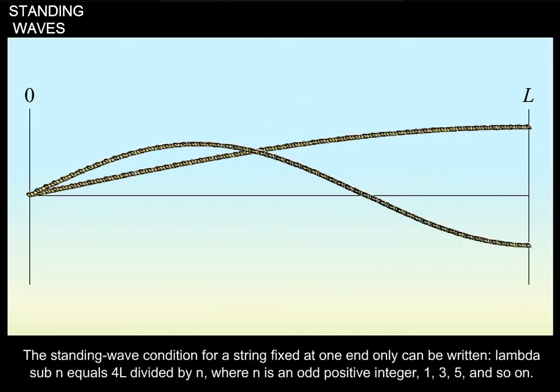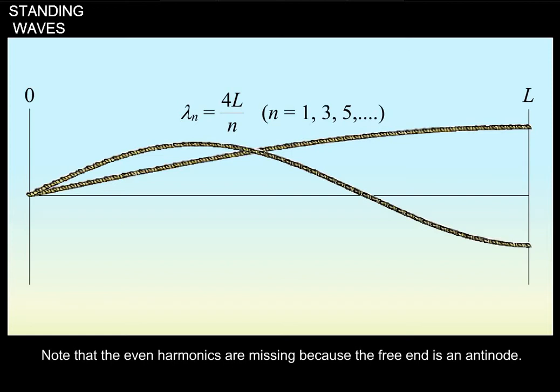The standing wave condition for a string fixed at one end only can be written lambda sub n equals 4L divided by n, where n is an odd positive integer 1, 3, 5, and so on. Note that the even harmonics are missing because the free end is an antinode.